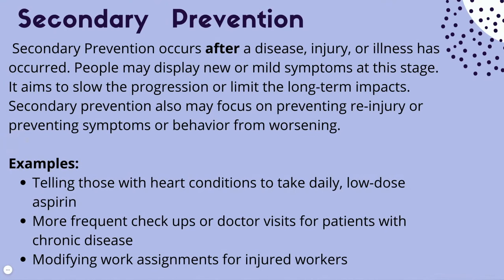The second type of prevention, moving up to the second rung in our triangle, is secondary prevention. This occurs after a disease, injury, or illness has occurred. With COVID, for example, if someone has COVID, secondary prevention tries to slow the progression of the disease and limit long-term effects — that's why people are told to quarantine, so they don't spread the disease further. Secondary prevention also tries to stop a re-injury from occurring and prevents worsening symptoms or behaviors.